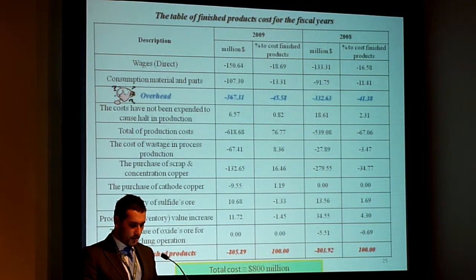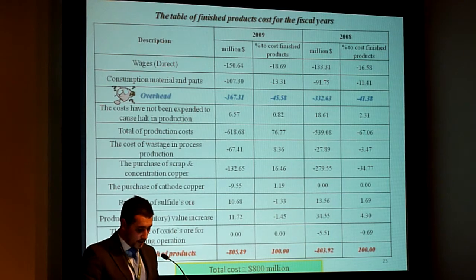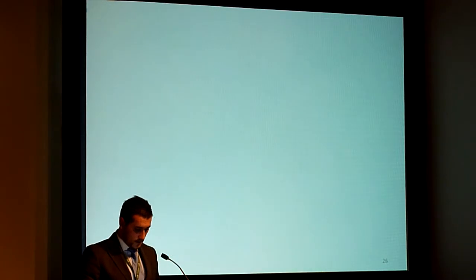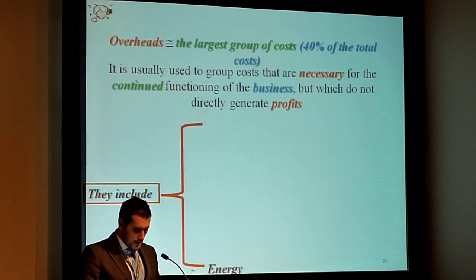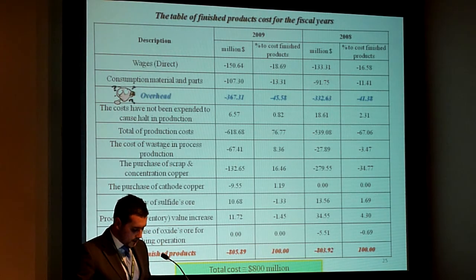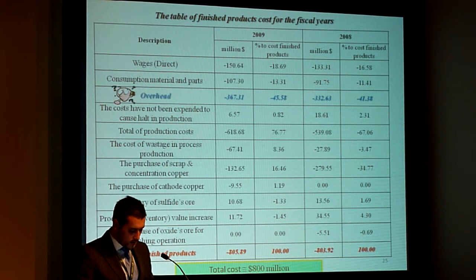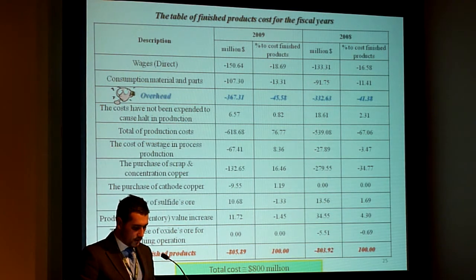This is again a view of the costs of this company. Note that the overheads comprise nearly 40% of the total costs. Also, $800 million dollars were the total costs, which you should be reminded that the average profits for three years were $750 million dollars.